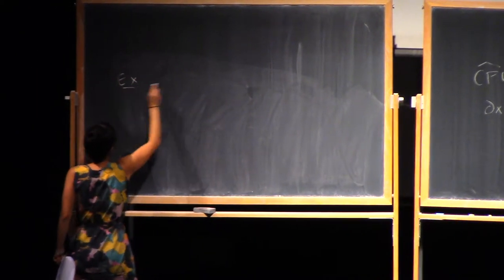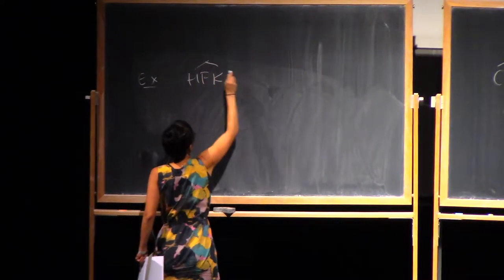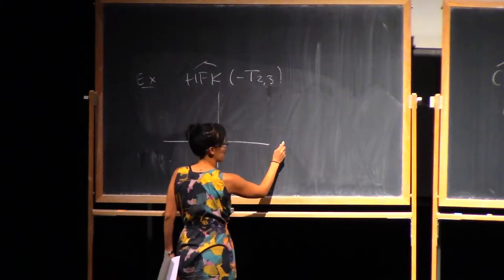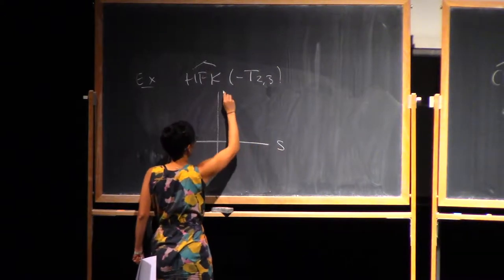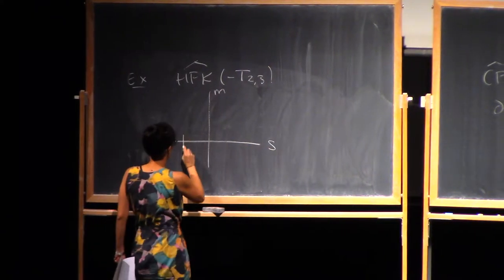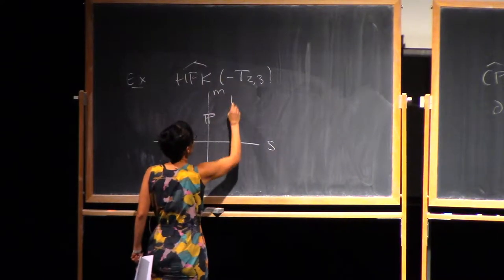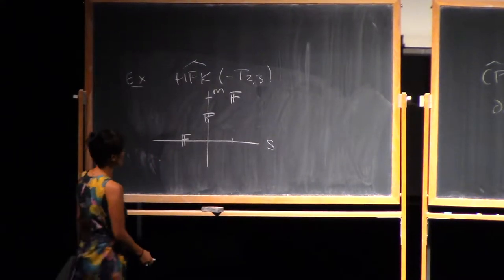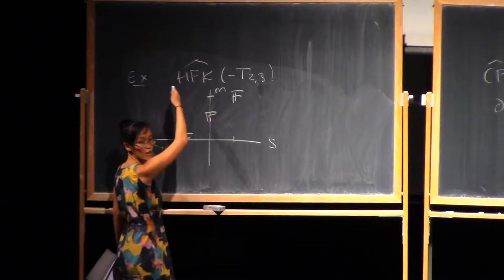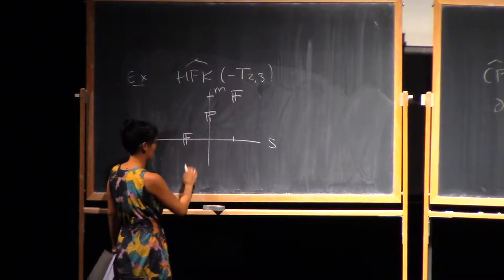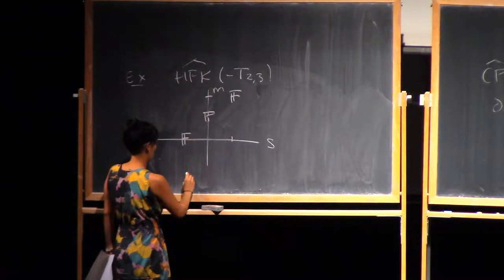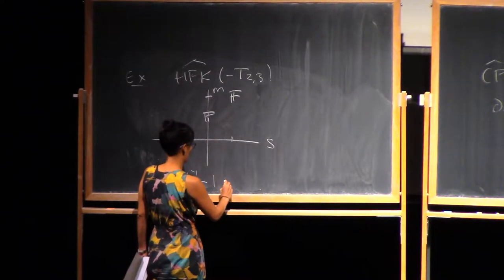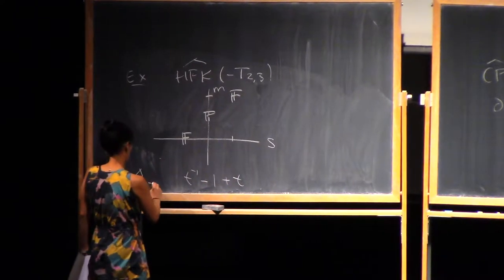For example, the knot Floer homology of the left-handed trefoil. I'll plot this on a pair of axes where the horizontal axis is the S-grading and the vertical axis is the M-grading. The graded Euler characteristic, computed in each S-grading, gives T to the minus one, minus one times T to the zero, plus T — and that is indeed the Alexander polynomial of the left-handed trefoil.